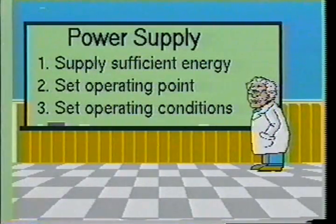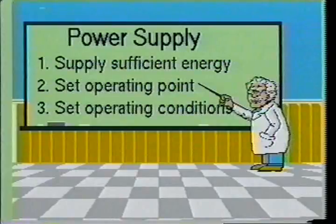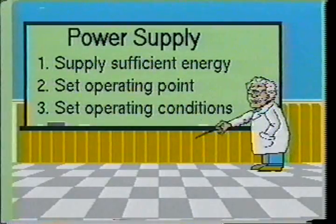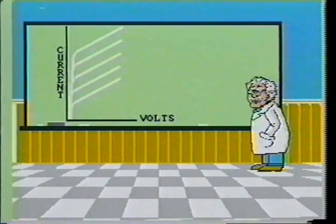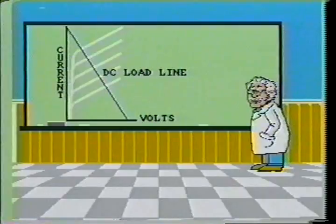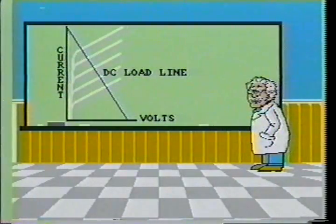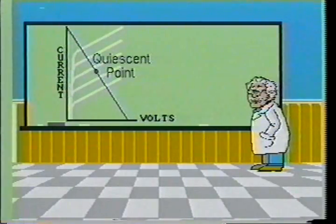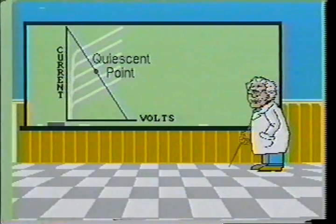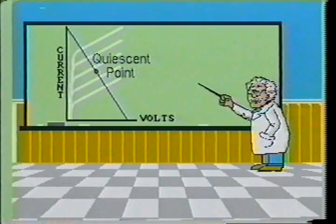The DC power supply used for an amplifier circuit must satisfy three requirements: it must supply sufficient energy to the amplifier stage, it is used to set the operating point of the device, and it is used to set the electrical operating conditions of the amplifier circuit. A family of characteristic curves may be plotted for any amplifier, and once plotted, a DC load line may be drawn. Typical amplifier operation will usually be somewhere along the DC load line between saturation and cutoff. When no input signal is applied, the amplifier's operating conditions will be at a specific point on the DC load line, referred to as the quiescent operating point or Q point.